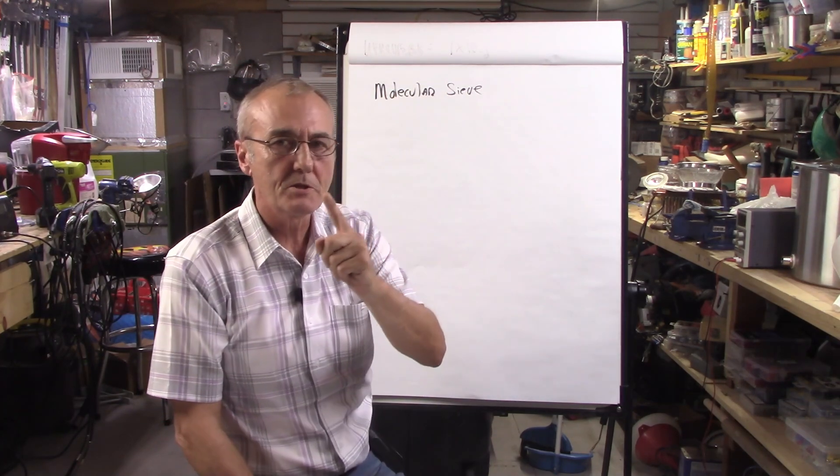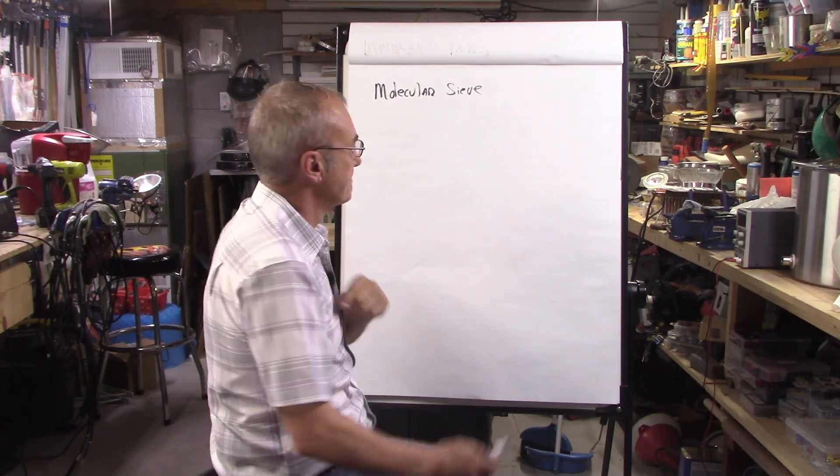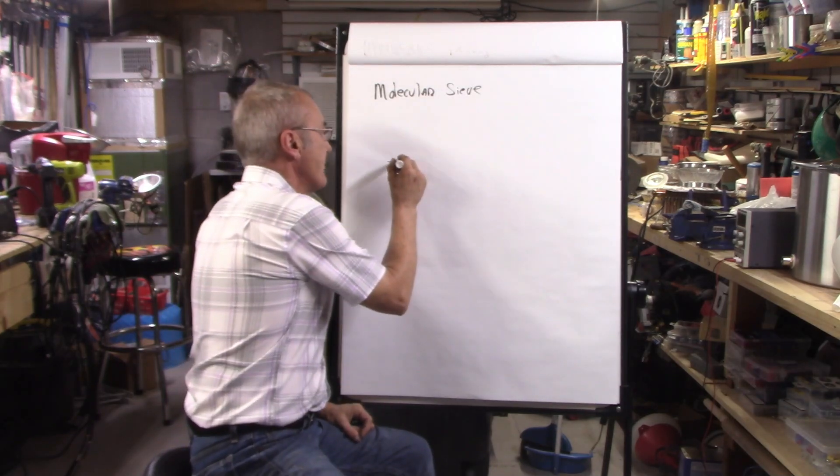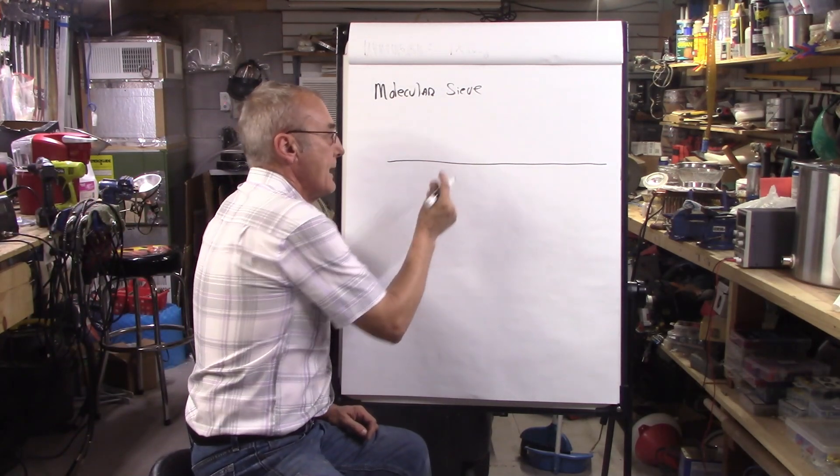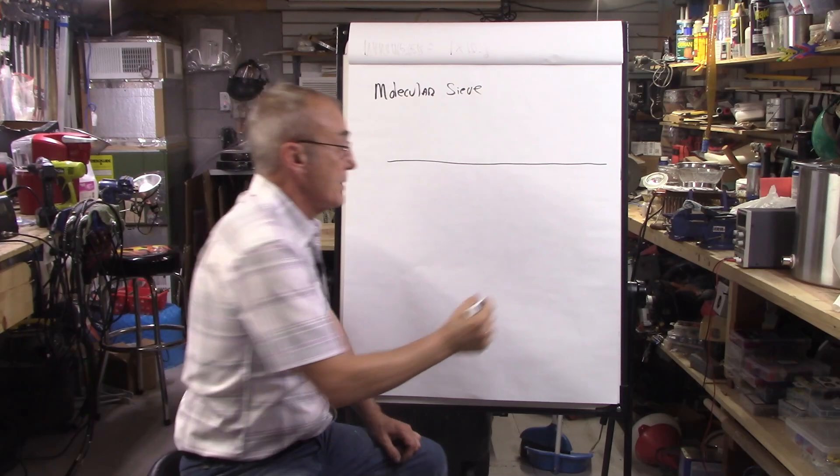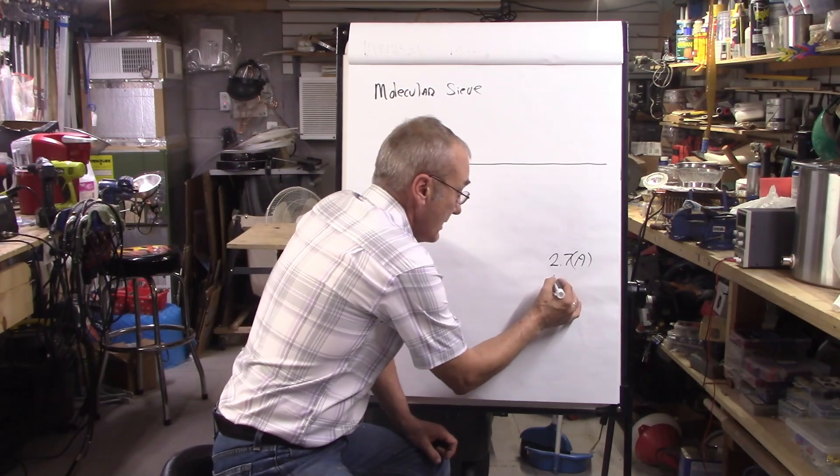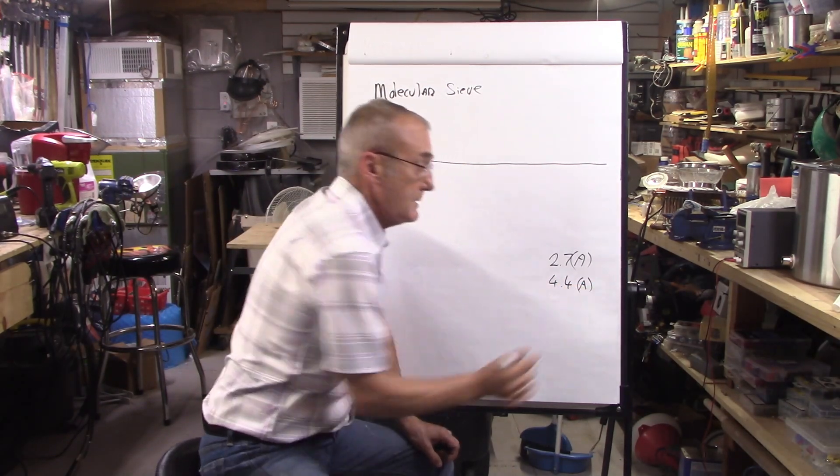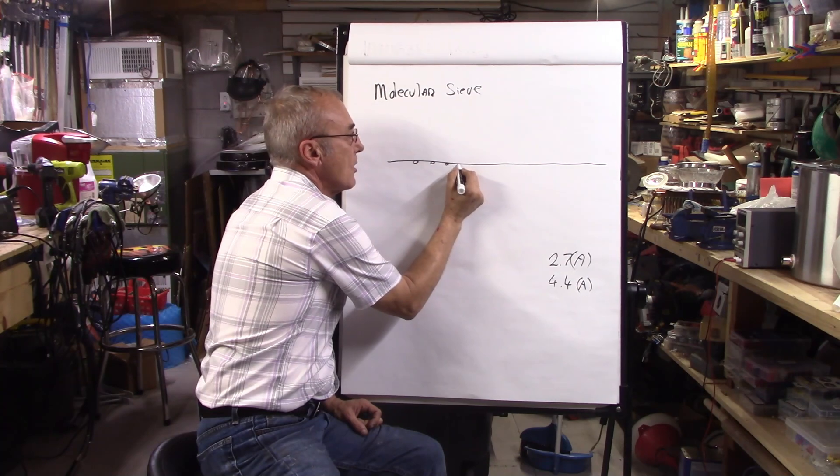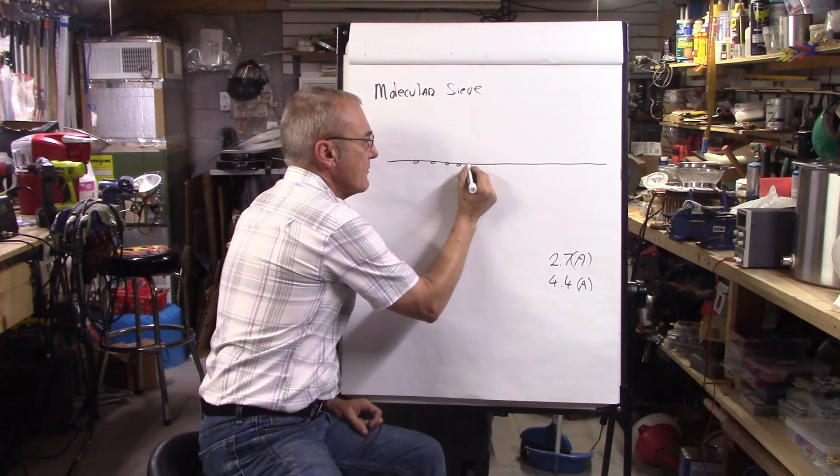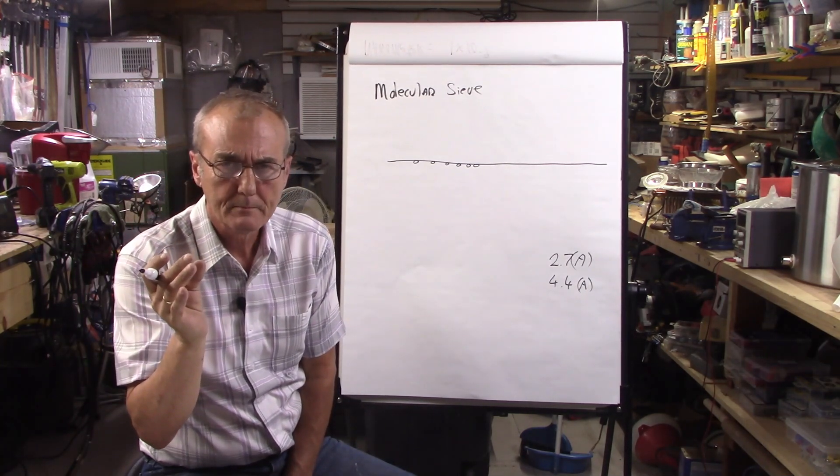Now watch this. Let's say for instance I have a screen, very, very, very tiny screen. And we already know that water is 2.7 angstroms. We know that ethanol is 4.4 angstroms. If I have three angstrom holes lined across here, all over the place everywhere, and they're only three angstroms in diameter, that's their size.